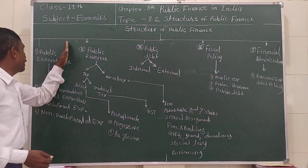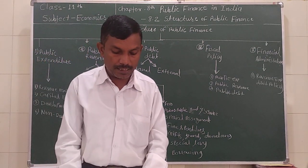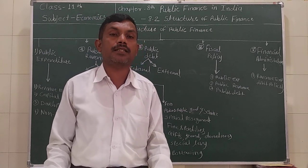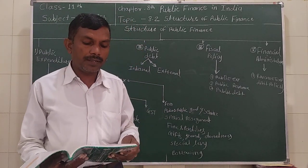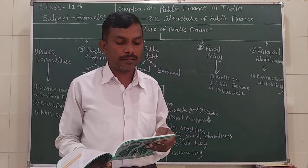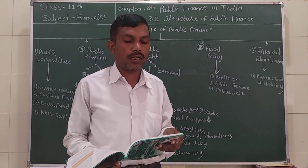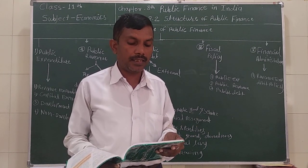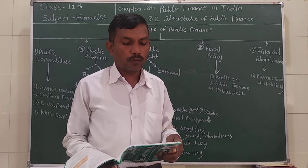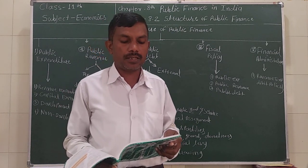The first topic in the structure of public finance is public expenditure. Meaning: public expenditure refers to that expenditure which is incurred by public authorities — center, state, and local bodies — for the protection of citizens, to satisfy the collective needs of the people, and to promote economic and social welfare.